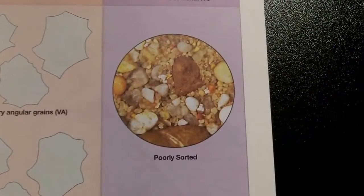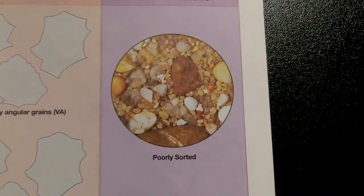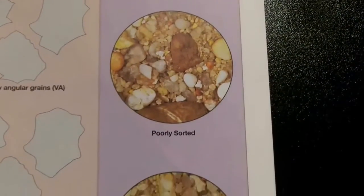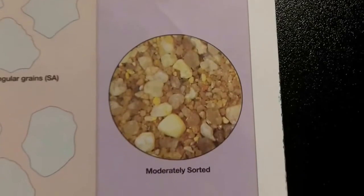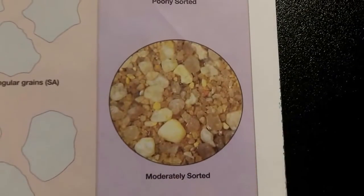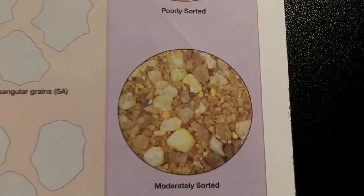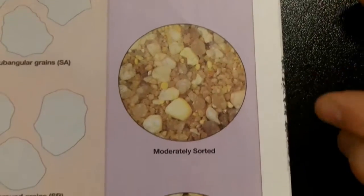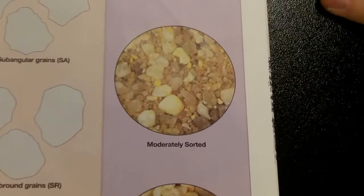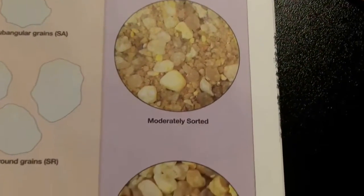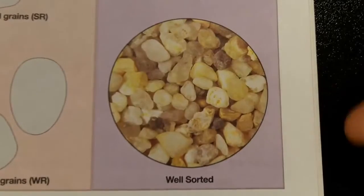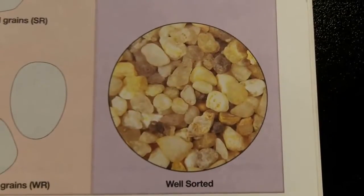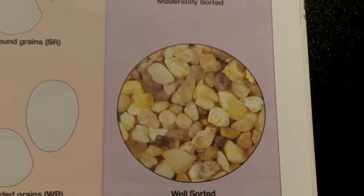Another quick recap here on grain arrangement: poorly sorted means a mixture of different size sediments; moderately sorted is a little bit organized; and well sorted means everything is pretty much the same size.